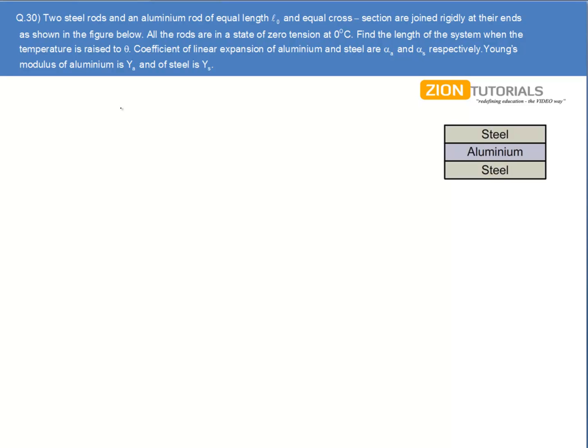Two steel rods and an aluminum rod of equal length L0 and equal cross-section area are joined rigidly at their ends as shown in the figure below. All the rods are in a state of zero tension at zero degrees. Find the length of the system when the temperature is raised to theta.